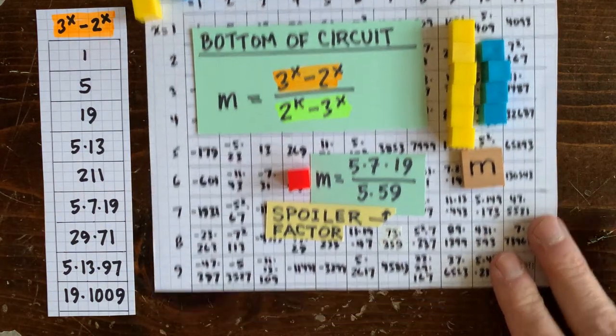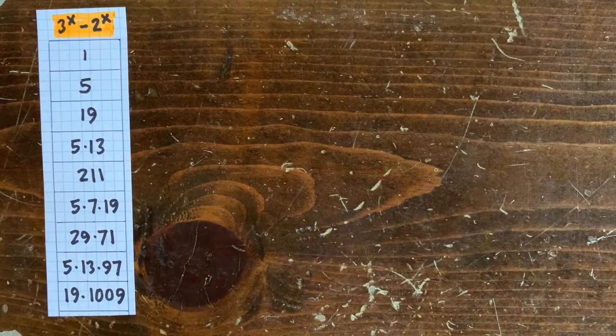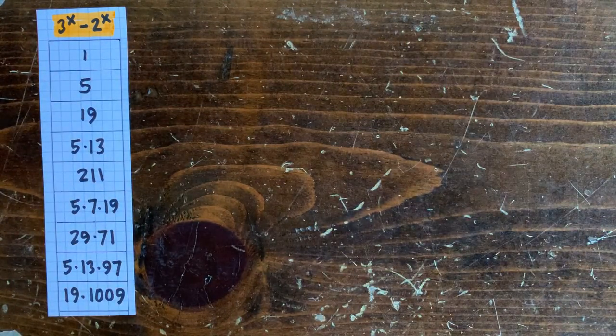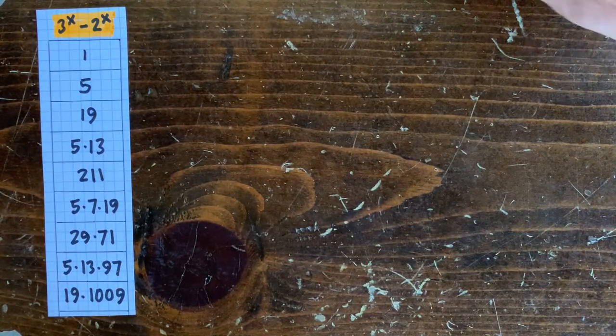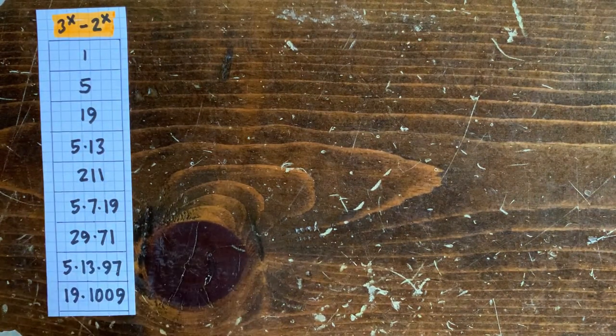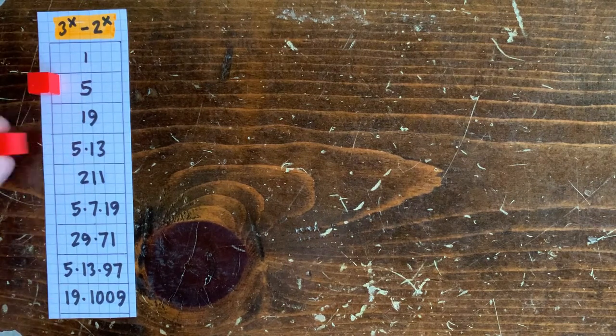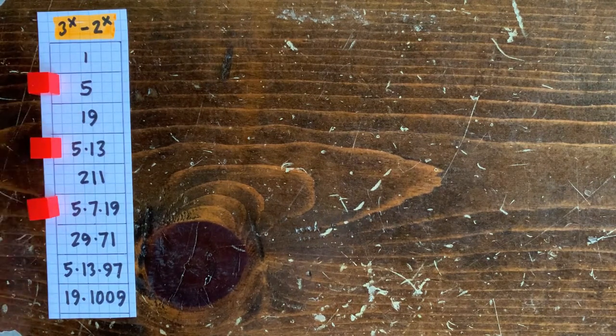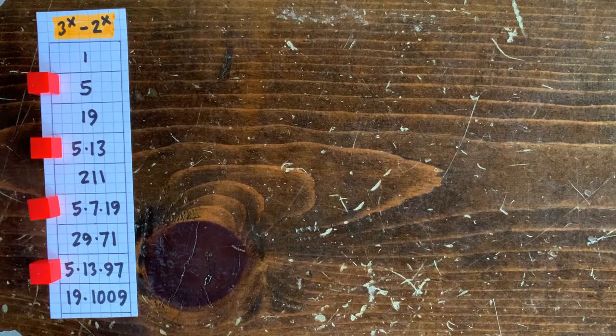These numbers look pretty random, so let's keep digging in to see if we can demystify them. Let's start with the chart on the left. We looked at this last time. We saw, for example, that for every even x, 3 to the x minus 2 to the x is divisible by 5. So what makes a number divisible by 5?